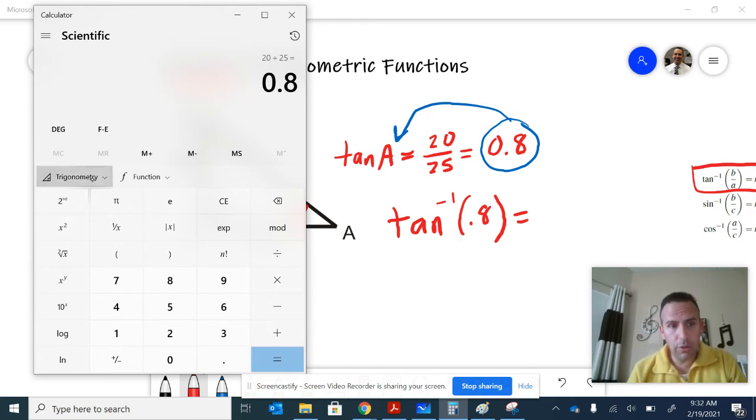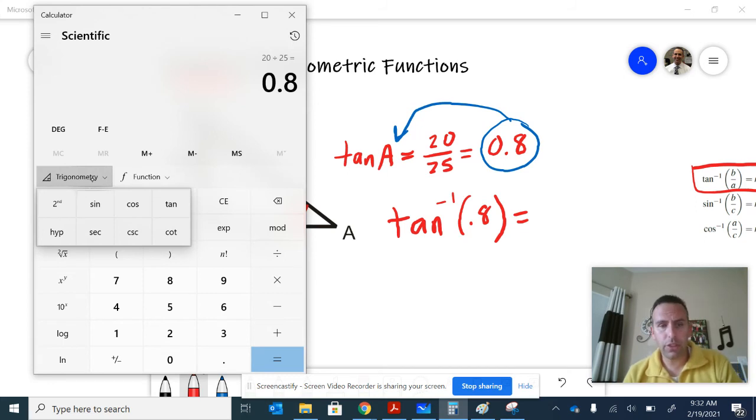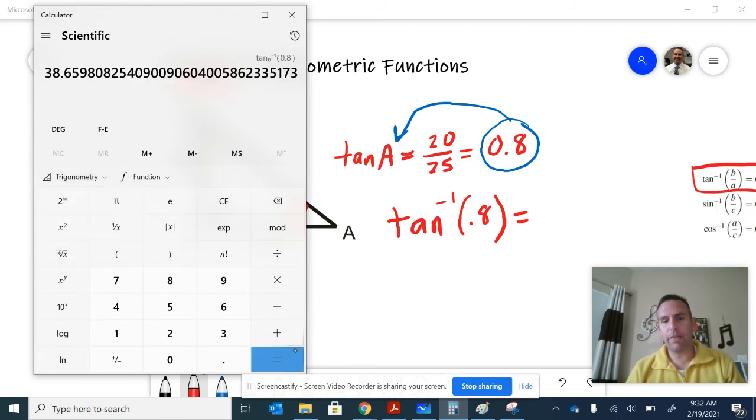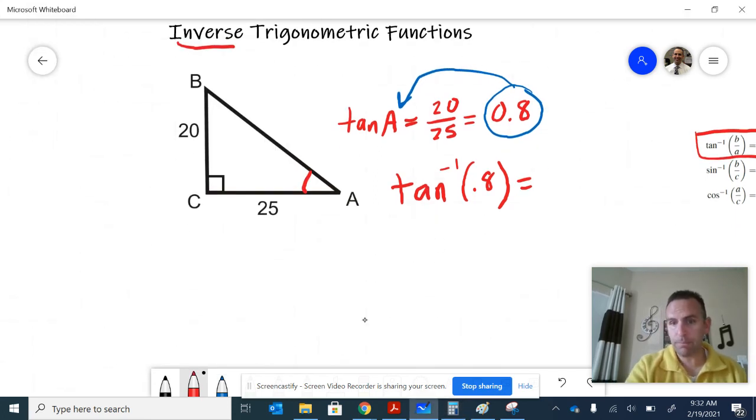Go to my trigonometric functions. On this computer calculator, I have to hit the second key, which is very typical of your calculator as well. And then I see the tangent inverse comes up. I click that and there's my value, 38.6598. This is the actual angle measure. I'm going to round off 38.66. That means that the measure of angle A or the size of angle A is 38.66 degrees.